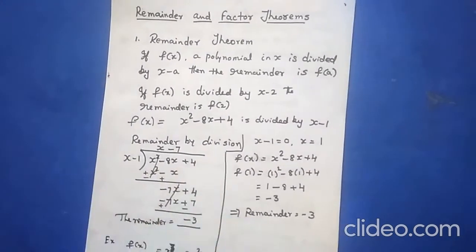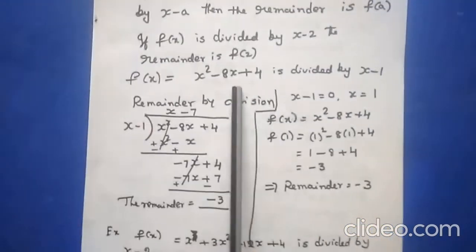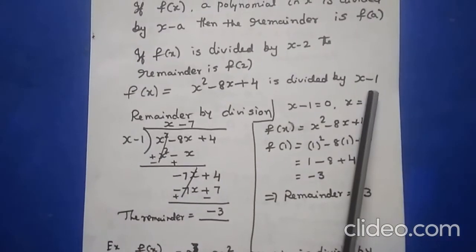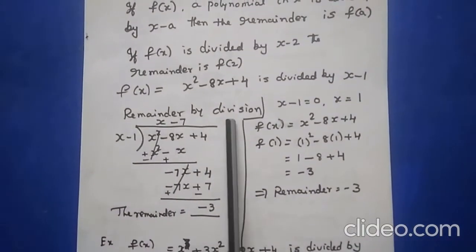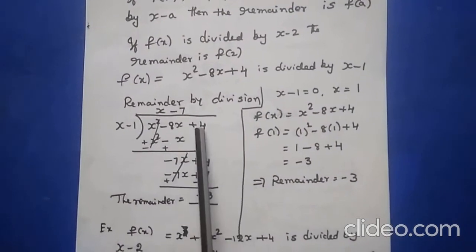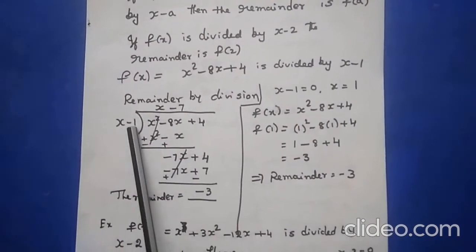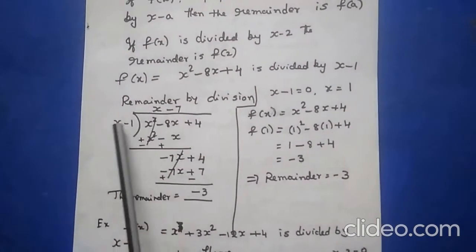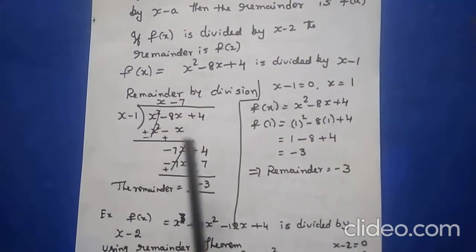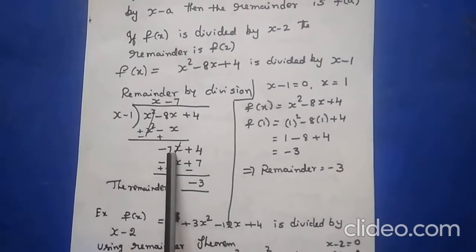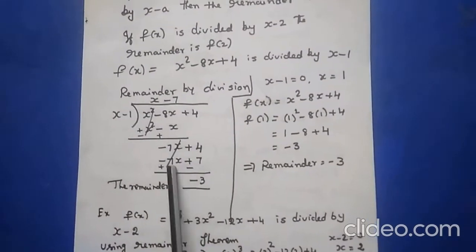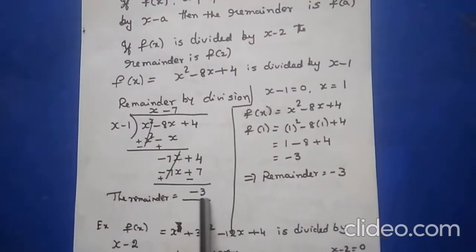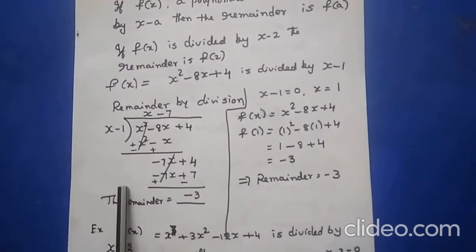For example, f(x) = x² - 8x + 4 is a polynomial. It is divided by x - 1. Using long division: x² - 8x + 4 divided by x - 1. You take x first, getting x² - x, then -7x. Multiplying by -7, you get the remainder -3. This is the long division method.